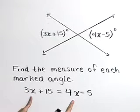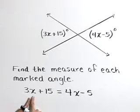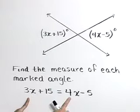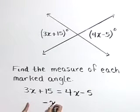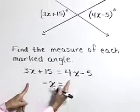Let's start by getting our x values on the same side. I'm going to subtract 4x from both sides. 3x minus 4x gives negative x. The 4x cancels on the right.